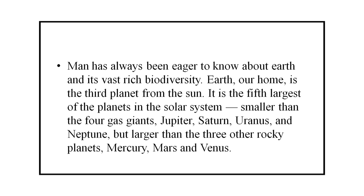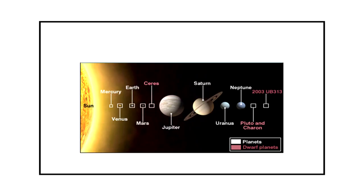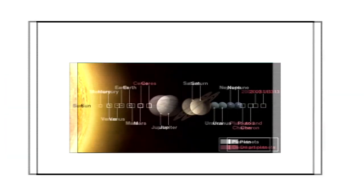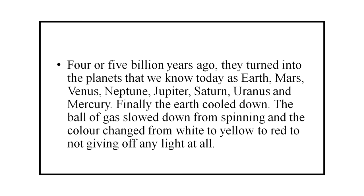Scientists believe that about 4.6 billion years ago, the Earth, the sun, and all the planets of the solar system were nothing but a cloud of cold dust particles swirling through empty space. Gradually these particles were attracted to each other and came together to form a huge spinning disk. Four or five billion years ago they turned into the planets we know today: Earth, Mars, Venus, Neptune, Jupiter, Saturn, Uranus, and Mercury.